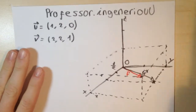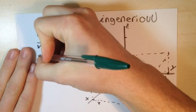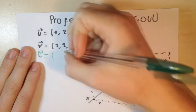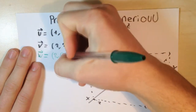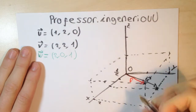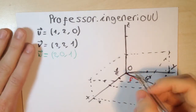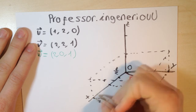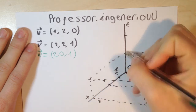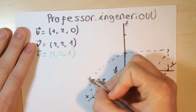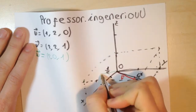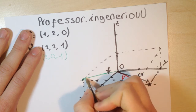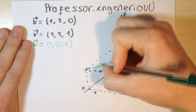I'm going to choose another vector — for example, this one: W, in green. W is (2, 0, 1). I draw it: 2 in X is here, 0 in Y, and 1 in Z — so the point is here and the vector is this one, the green one. This is W.